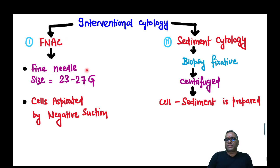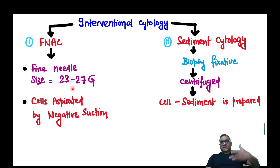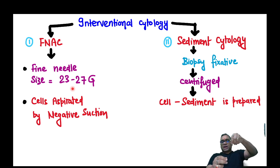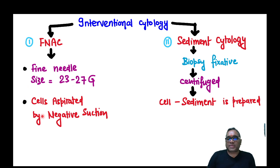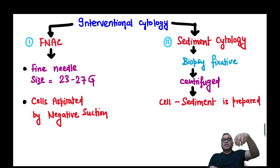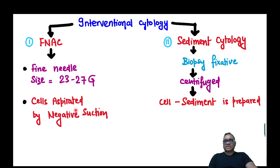The needle size used in FNAC is 23 to 27 gauge. Cells are aspirated by pulling back the plunger, which creates a negative suction. This negative pressure pulls the cell material into the needle hub. That is why we say cells are aspirated by negative suction.